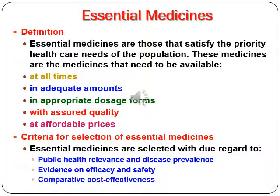Essential medicines are those that satisfy the priority health care needs of the population. These medicines need to be available at all times in adequate amounts, in appropriate dosage forms, with assured quality, at affordable prices. The criteria for selection of essential medicines include public health relevance, disease prevalence, evidence on efficacy and safety, and comparative cost-effectiveness.